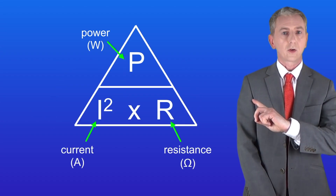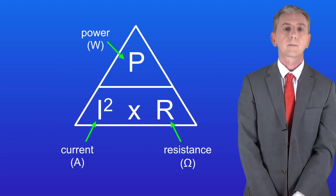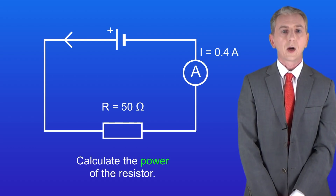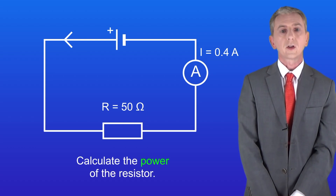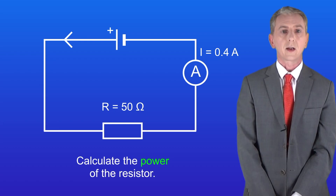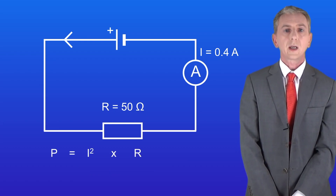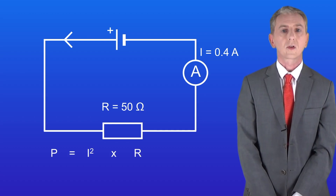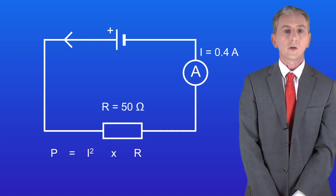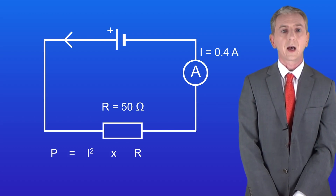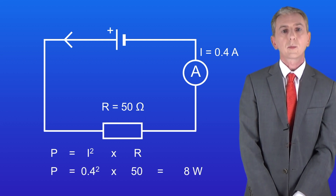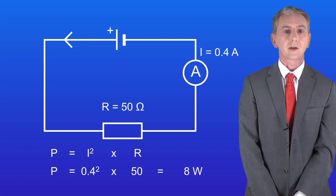Here's a triangle if you prefer to use that. Calculate the power of the resistor — pause the video and try this yourself. The power equals the current squared multiplied by the resistance. The current is 0.4 amperes and the resistance is 50 ohms. Putting these numbers into the equation gives us a power of 8 watts, and that's our final answer.